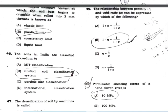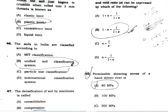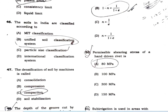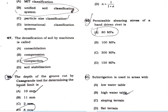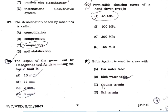A groove of 3 mm defines the shrinkage limit. The plastic limit and liquid limit are key Atterberg limits. India's soil classification uses the Unified Soil Classification System (USCS). The densification of soil by machine is known as compaction.